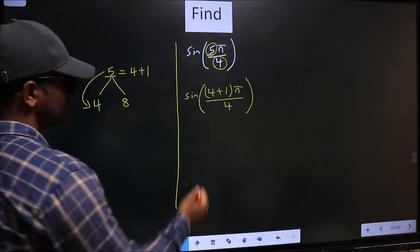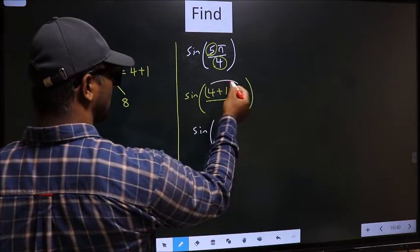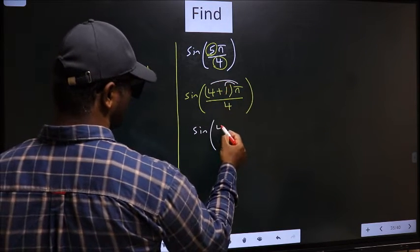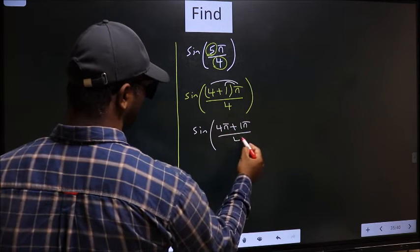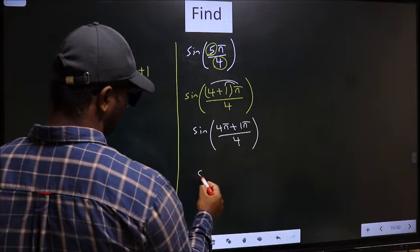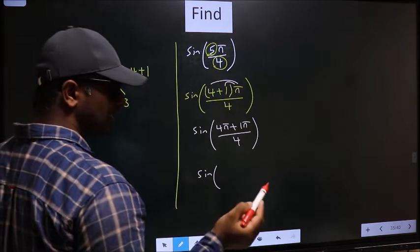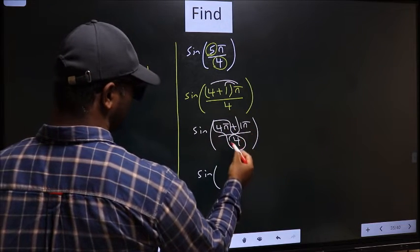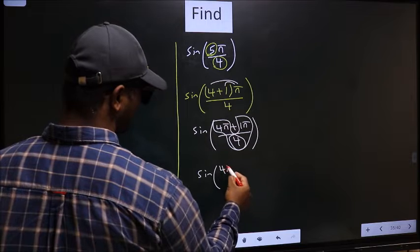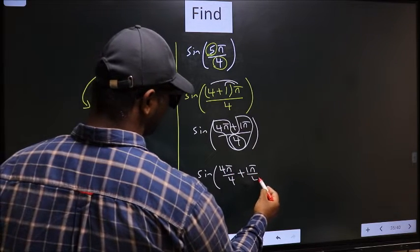Next, sin. Now you should open up the brackets. So you get 4 pi plus 1 pi by 4. Now you should split the denominator in this way. That is 4 pi by 4 plus 1 pi by 4.